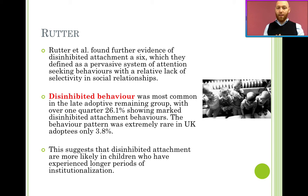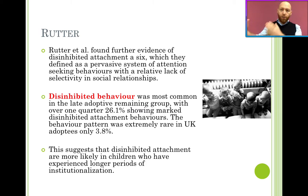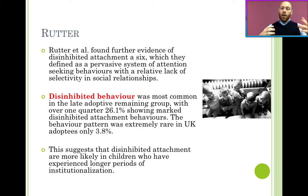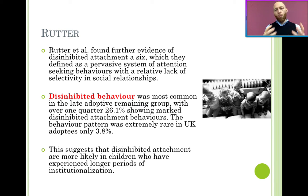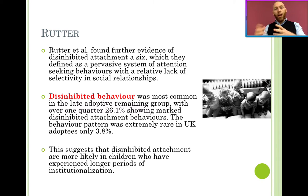Rutter found further evidence for disinhibited attachment. He found that children who were adopted before six months showed very little disinhibited attachment, but the later the adoption occurred after six months, the higher the percentage. Over one quarter — 26.1% — showed marked disinhibited attachment, compared to only 3.8% for UK adopters. This suggests that disinhibited attachment is more likely in children who have experienced longer periods of institutionalization.